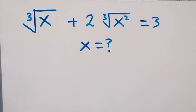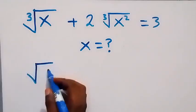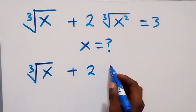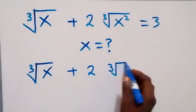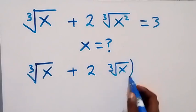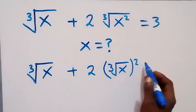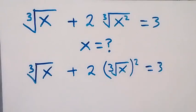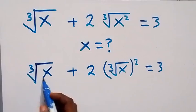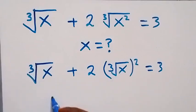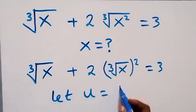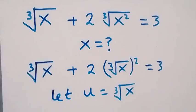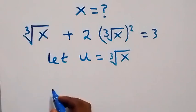To find the value of x, let's write this as cube root of x plus 2 times cube root of x, then raised to power 2. This power of 2 we can take it out and apply the law of indices. So let u be equal to cube root of x.